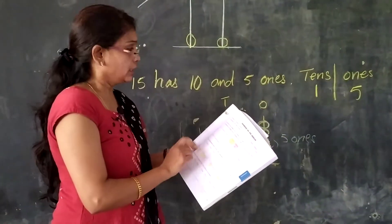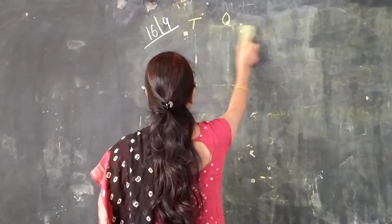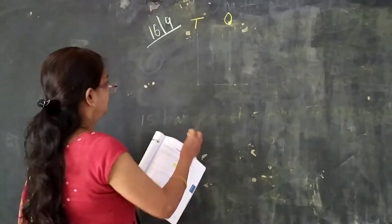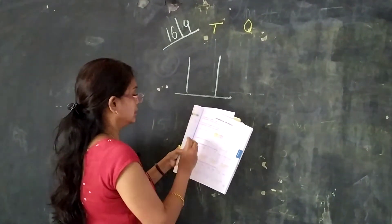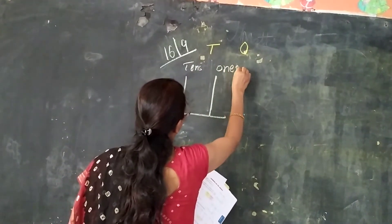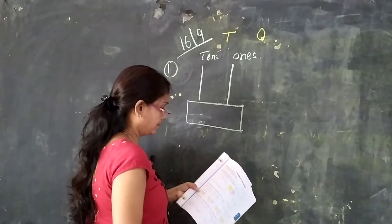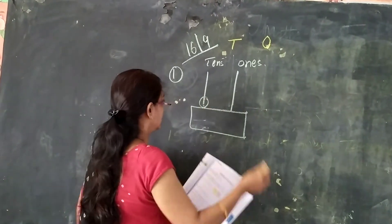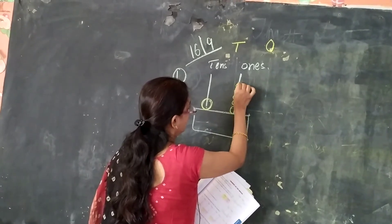In this same way we will be doing these exercises now, children. Count the beads and write the number. Exercise is given children. Count the beads and write the number. Here it is tens and here it is ones. One ten is there. And here children, how many beads? One, two, three, four, five, six. Right?